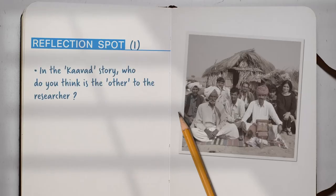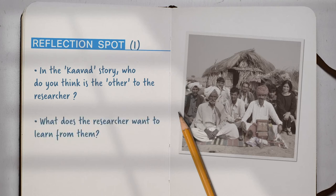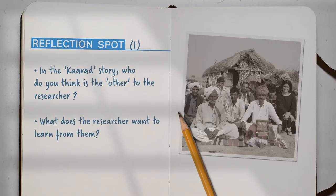Let's pause here and reflect on some questions. In the Kavad story, who do you think is the other to the researcher? What does the researcher want to learn from them? Some of you may have answered that the other here is the Kavad storyteller. Others might have also noted that the patrons and listeners are the other. Given that we are viewing the sequence from the perspective of the researcher, then everyone outside the research team is the other. Some of you may have noted that the researcher wants to learn about the lifestyle of the Kavad storytellers. Others may have thought the researcher wants to understand how the Kavad story box is faring in the digital age. Both answers are acceptable.